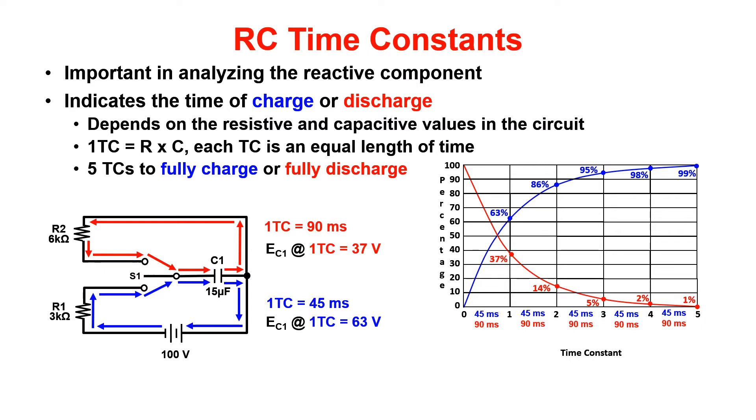If we start with a charge path, we would perform the calculation 3K times the capacitor value 15 micro to get one TC of 45 milliseconds. Now to get the full charge time, we take the value 45 milliseconds times five to get the full charge time.